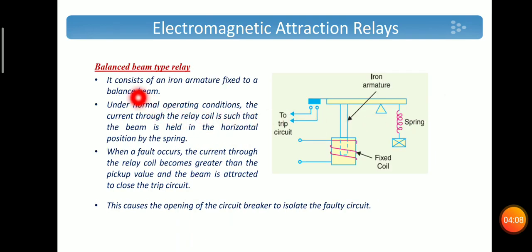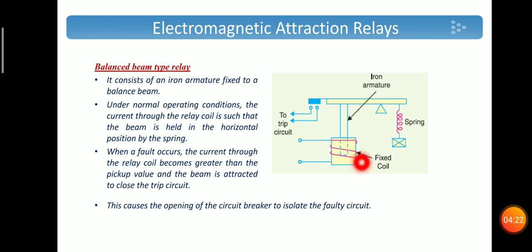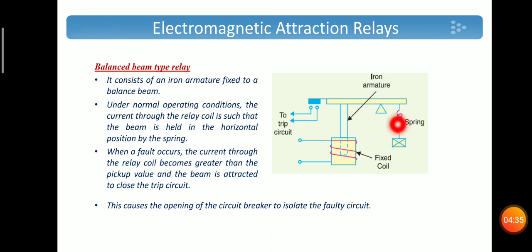The next type is balanced beam type relay. It consists of an iron armature fixed to a balanced beam. Under normal current condition, the current through the relay coil is such that the beam is held in a horizontal position by the spring arrangement. When a fault occurs, the current exceeds the pickup value, the balanced beam is attracted towards the electromagnet, closing the trip circuit and hence operating the circuit breaker.